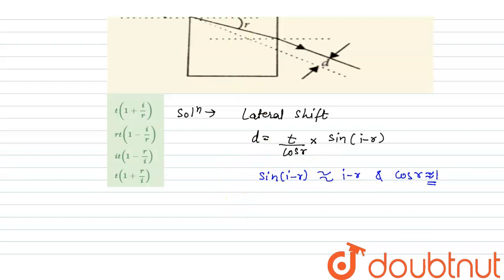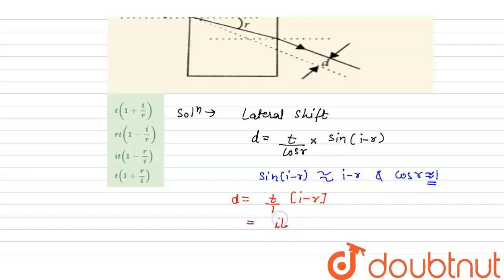Now, we will put the values in the equation. So, d will be equal to t divided by 1, multiplied by (i minus r). If we take i as common from the bracket, it will be equal to i·t × (1 minus r/i), which is our answer, and in the options it is option 3rd.